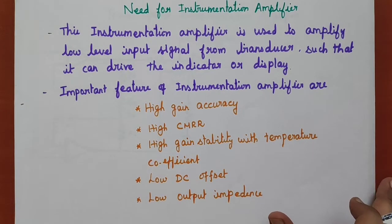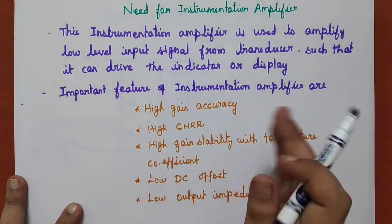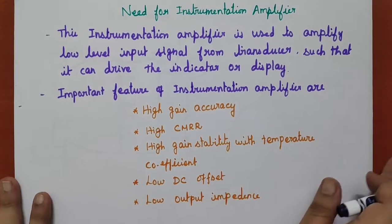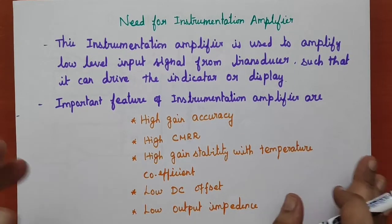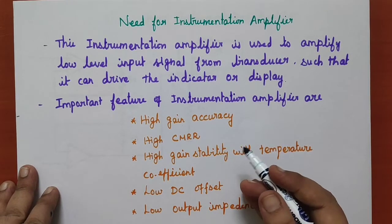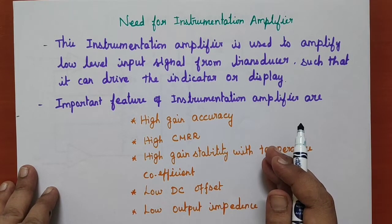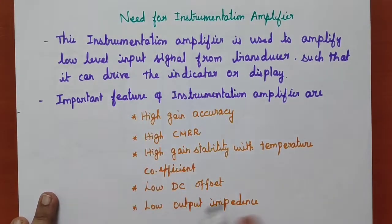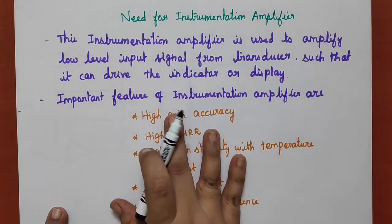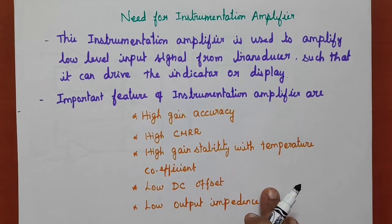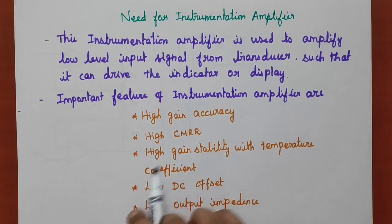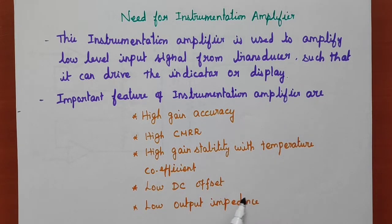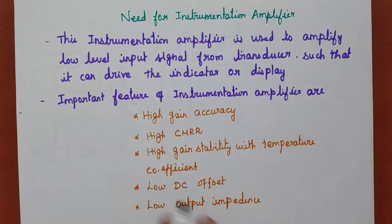The question arises: why particularly this instrumentation amplifier? We have many types of amplifiers like BJT, FET, MOSFET, and the differential amplifier from the op-amp itself can act as an amplifier. Why we go for the instrumentation amplifier? Because of these characteristics. The important features of instrumentation amplifier are: high gain accuracy, high CMRR, high gain stability with temperature coefficient, low DC offset, and low output impedance.